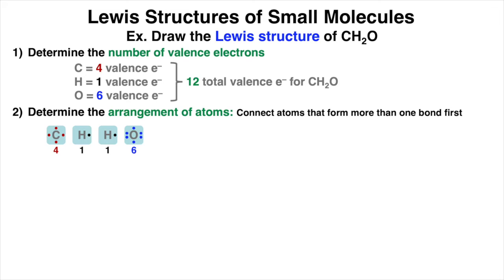So let's connect the atoms that form more than one bond first. Since hydrogen atoms only form one bond each, we'll save those for last. So let's first connect the carbon and oxygen atoms together. And notice that there's a shared bond between C and O, where each atom contributes one valence electron to form a pair. Then we're going to connect all the hydrogen atoms. We're going to place the hydrogen atoms next to the carbon atom because it has more unpaired electrons than oxygen.